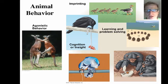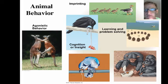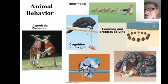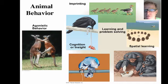This raven trying to figure out how to get that meat is a good example of cognition or insight. Animals of high intelligence can actually solve a problem without having seen it done before. These insects are learning spatially to cue into objects around them to find food or their nest.